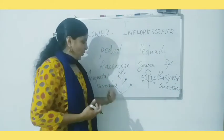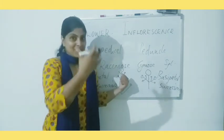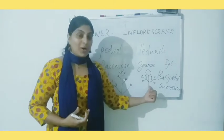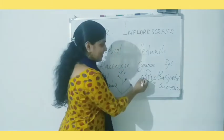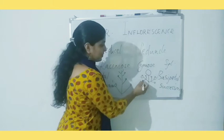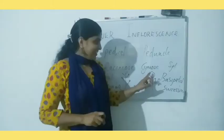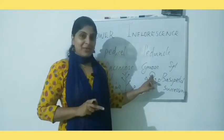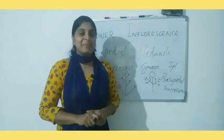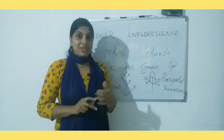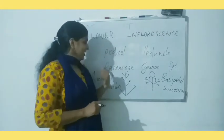Acropetal succession means older flowers towards the basal side of the axis and younger flowers towards the topmost region. Basipetal succession means older flowers at the center portion and younger flowers towards the sides. The first-formed flower is at the center and surrounded by younger flowers — that is known as basipetal succession. So the two patterns are acropetal and basipetal, corresponding to racimose and cymose inflorescence.